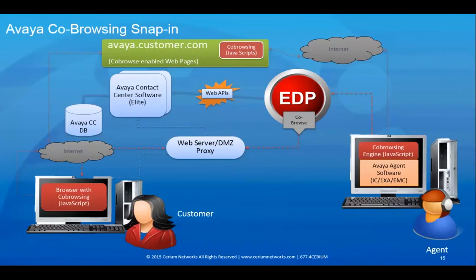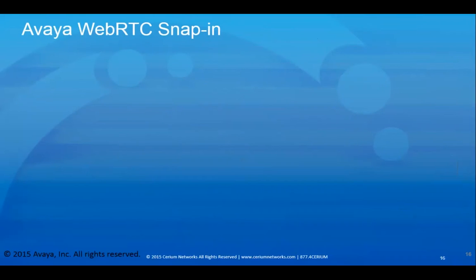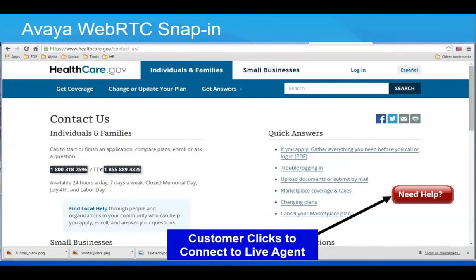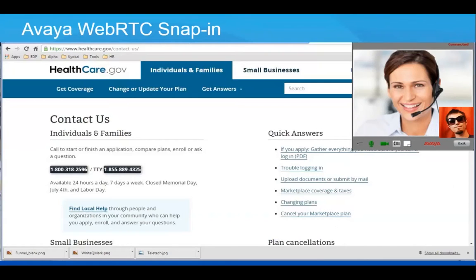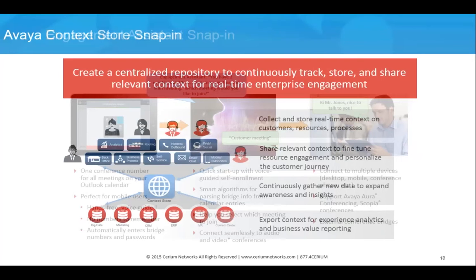The co-browsing snap-in facilitates integration of this functionality into your contact center. The WebRTC snap-in facilitates click-to-call functionality from any supported browser by connecting an audio path along with the associated webpage information to the agent. The Engagement Assistant snap-in provides users with one-number conferencing for all meetings on their Outlook calendar, automatically handling dial-in and PIN access for you.